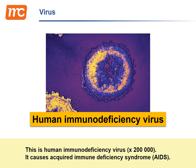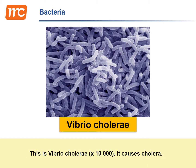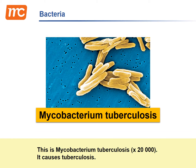This is Human Immunodeficiency Virus — it causes Acquired Immune Deficiency Syndrome (AIDS). This is Vibrio cholerae — it causes Cholera. This is Mycobacterium tuberculosis — it causes Tuberculosis.